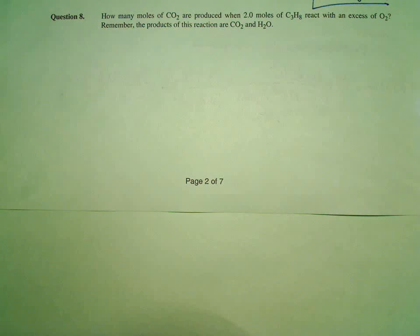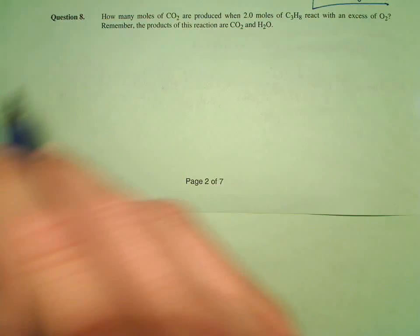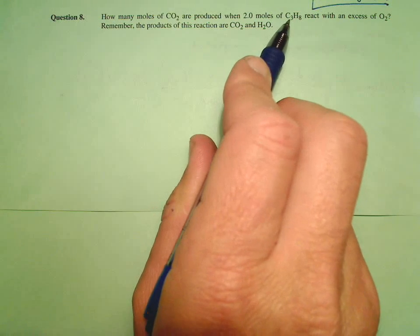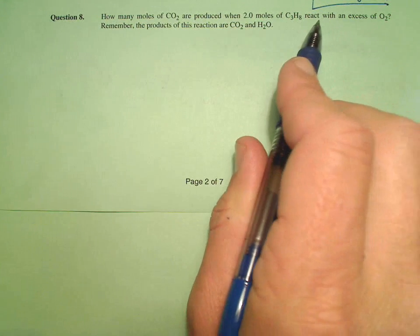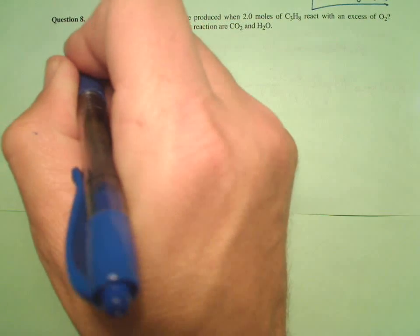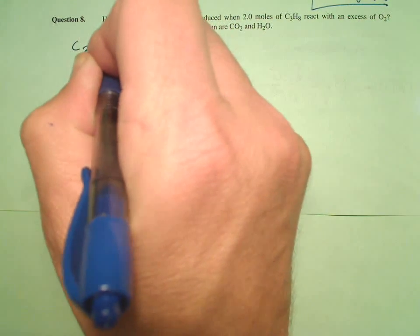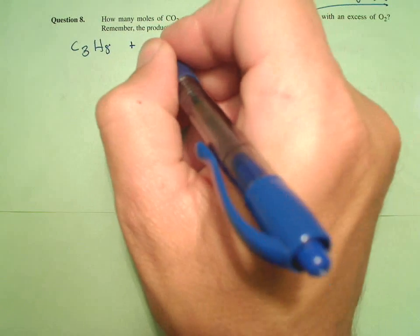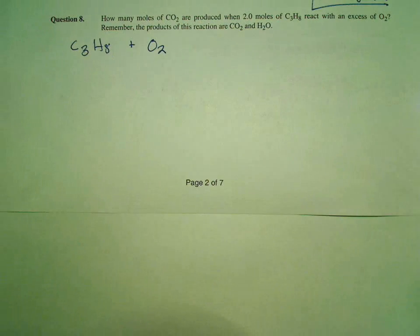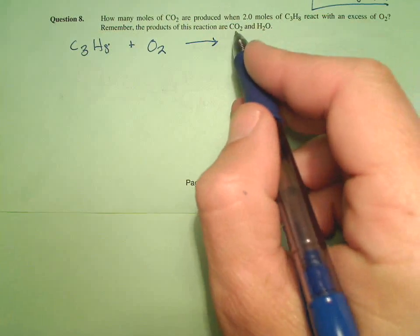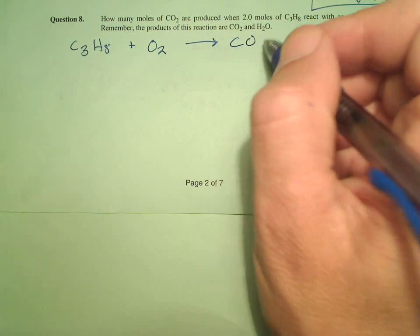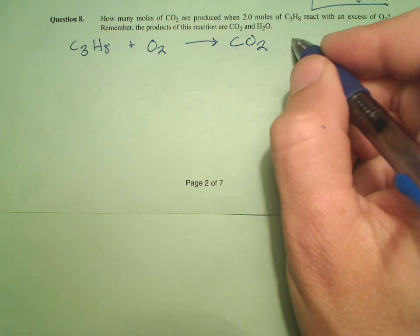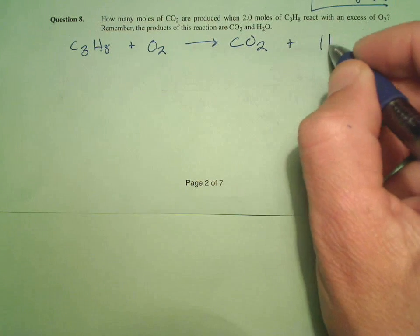Like any stoichiometry problem, I need the balanced equation. I know the reactants are C3H8 reacting with an excess of O2. So I have C3H8 plus O2, and the products, like all hydrocarbon combustion, are carbon dioxide and water.